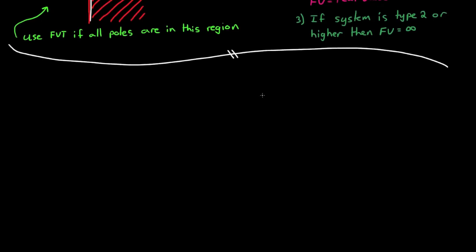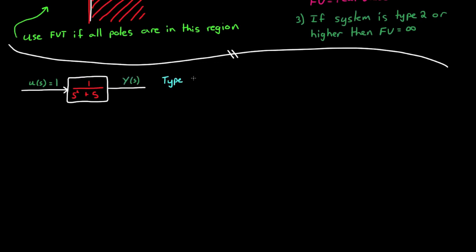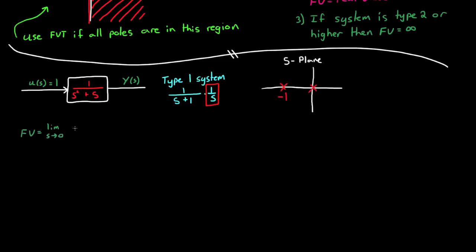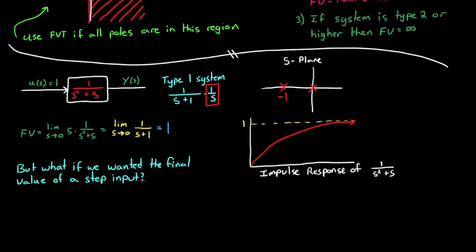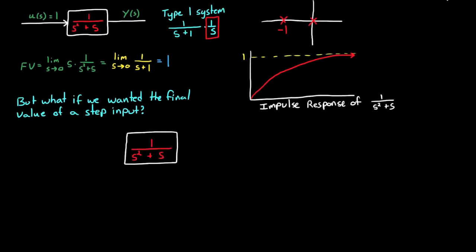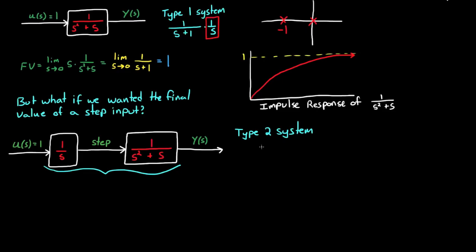So let's use the final value theorem in practice. Let's start with the transfer function 1 over s² plus s, and find the final value for an impulse input. The Laplace transform of an impulse function is just 1, so that's our input. This system is a type 1 system — you can see that clearly by factoring out a 1 over s. One pole is at the origin and the second pole is in the left half-plane, so we can use the final value theorem, and we find that the final value is 1. But what if we wanted to find the final value of a step input for this system? We can integrate the impulse input to get a step input, and when we do that, we've added another pole at the origin, making this a type 2 system. If you use the final value theorem now, you'll find that the final value is infinite, just as you'd expect from a type 2 system.